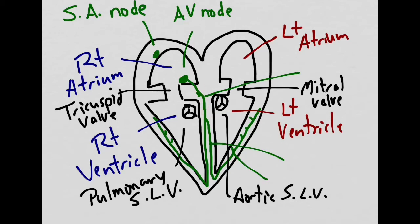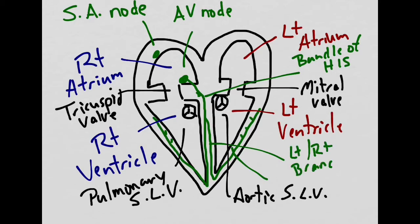The next step is the bundle of His, which will eventually branch out into left and right branches. These branches will go down to the apex of the heart and then back superior to the base and extend out into Purkinje fibers.